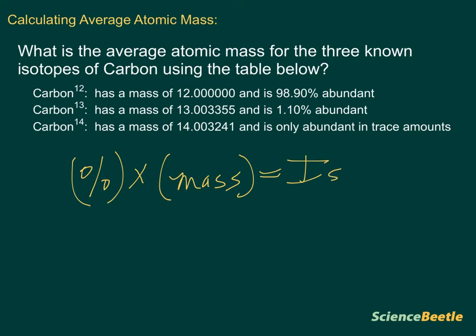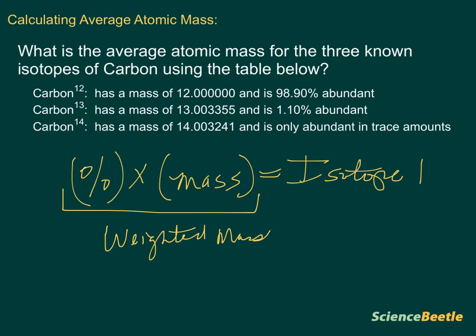So this is going to be for isotope 1, we're going to do the same thing for isotope 2, isotope 3, and then at the very end of that, we're going to be able to get the overall average. Because what this is, this is going to be a weighted mass based on the percentage of the abundance for each and every isotope.